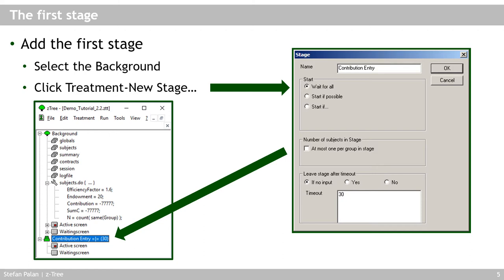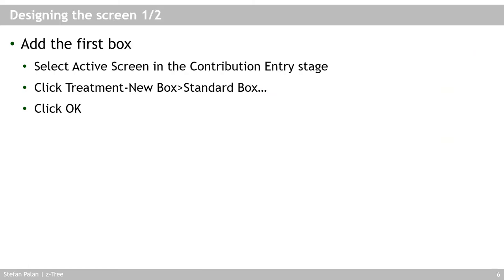The new stage is like an empty container — nothing is yet on it. What we now want to do is put all the elements on it that subjects need for their contribution entry. They need some output — we need to tell them what they are supposed to do on screen. We need to provide a field where they can actually make their contribution choice. And finally, we need a button which they can click to confirm their contribution. Every stage is organized into boxes.